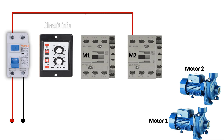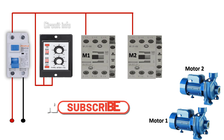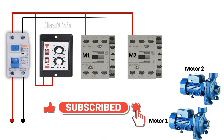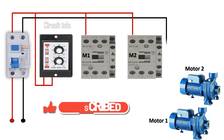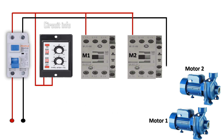When the timer is activated, motor 1 will run for the first cycle. After the preset time, the timer automatically switches to motor 2. This way both motors share the running load, which prevents overheating, reduces wear and tear, and ensures continuous operation.